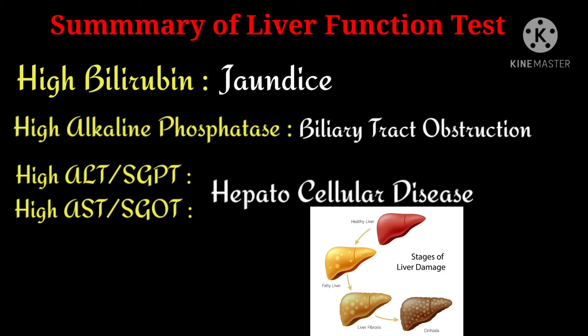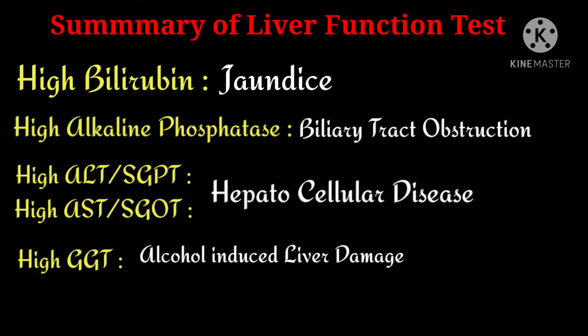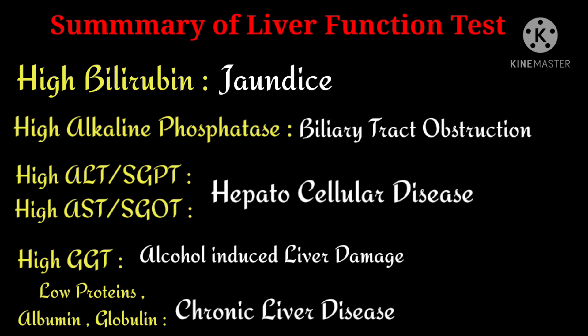If AST and ALT levels are increased, there may be hepatocellular disease. If GGT (gamma glutamyl transferase) levels are increased, it may indicate alcohol-induced liver disease. If total proteins — albumin and globulin — are reduced, low protein levels may indirectly suggest a chronic liver problem. This concludes the overview of liver function tests.